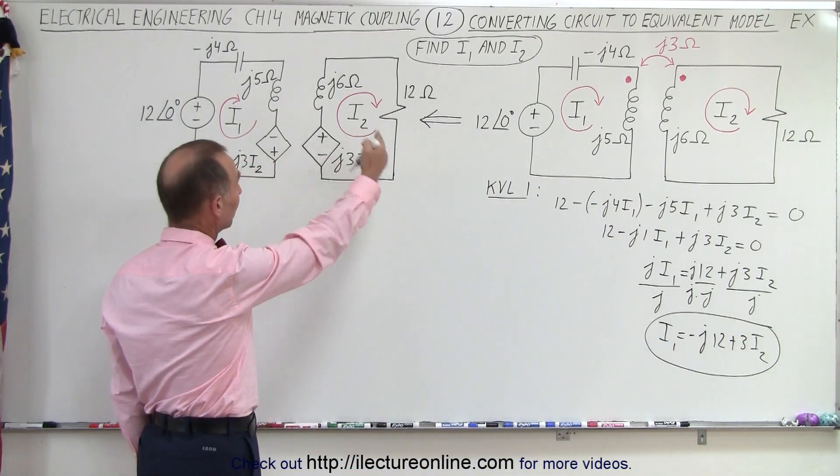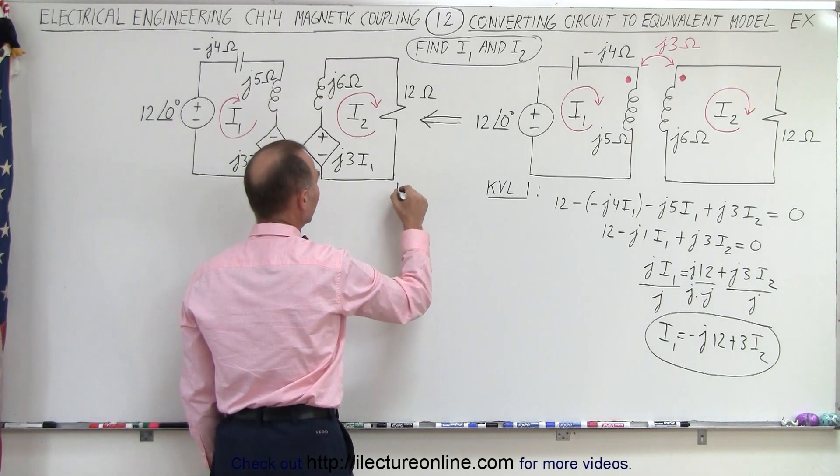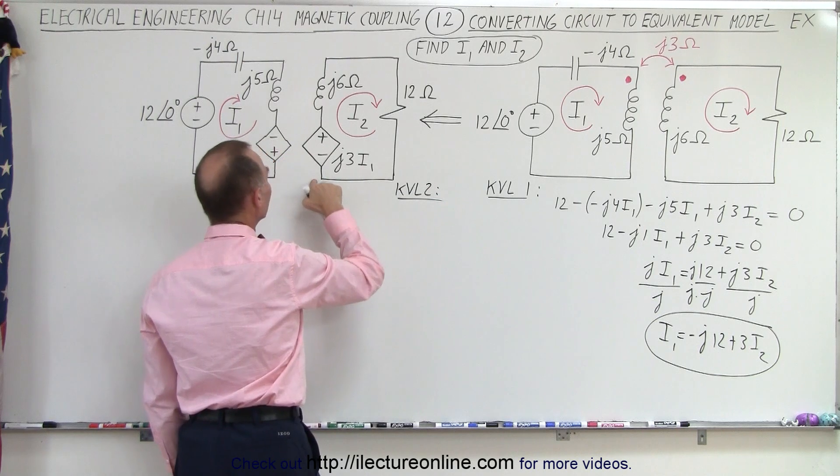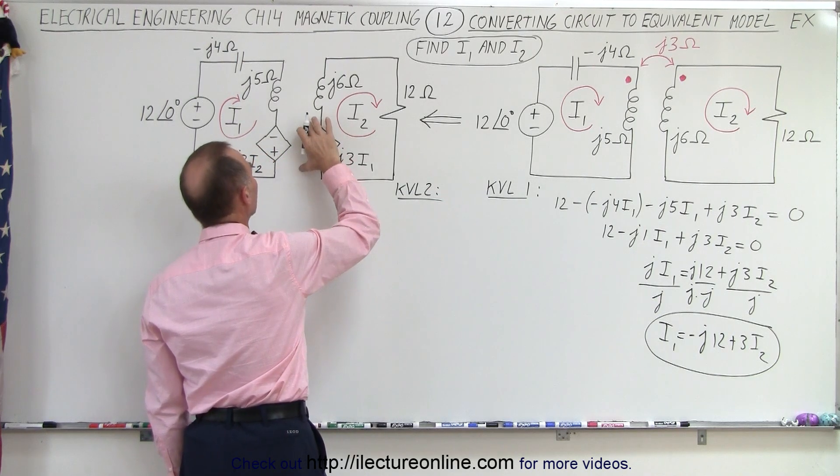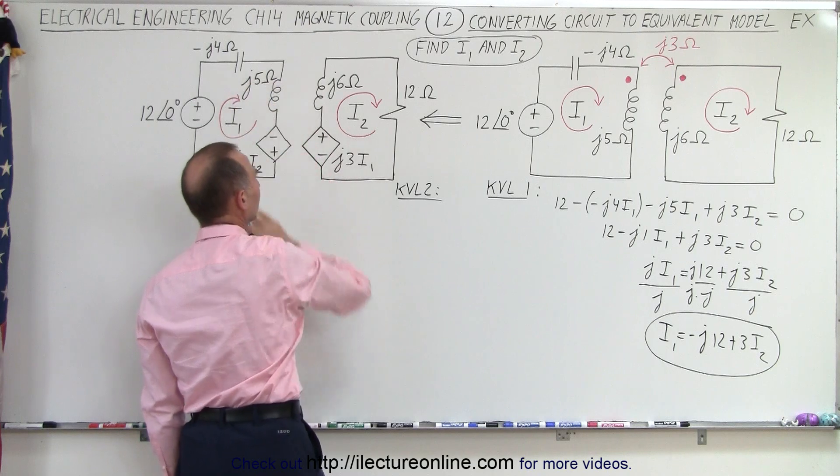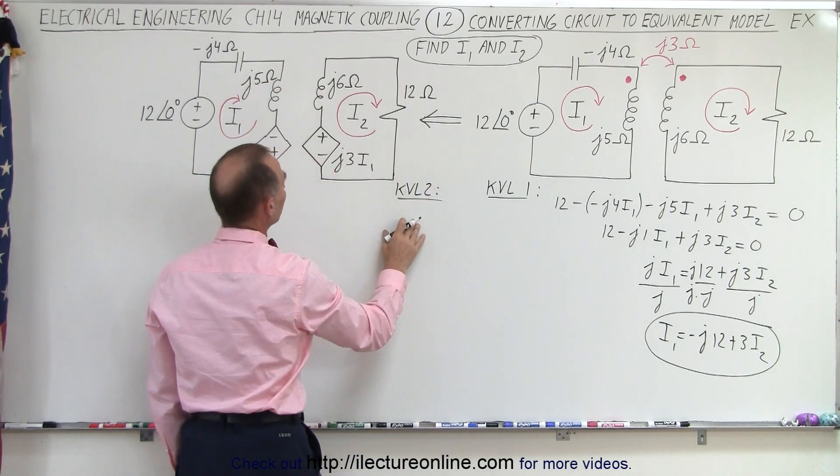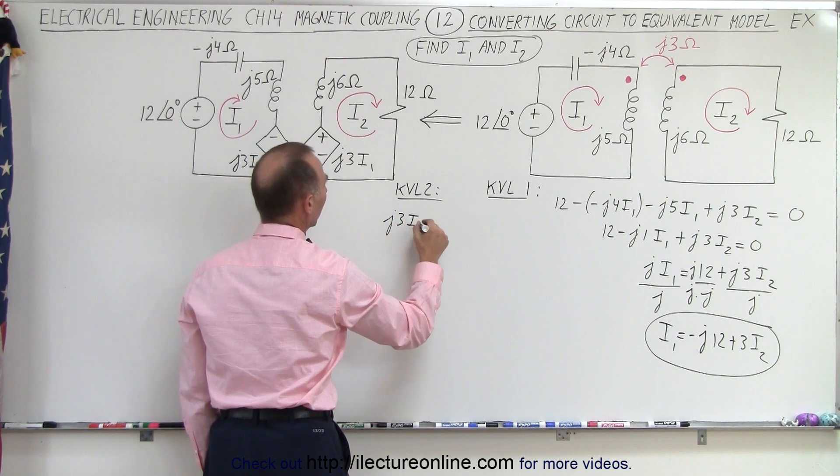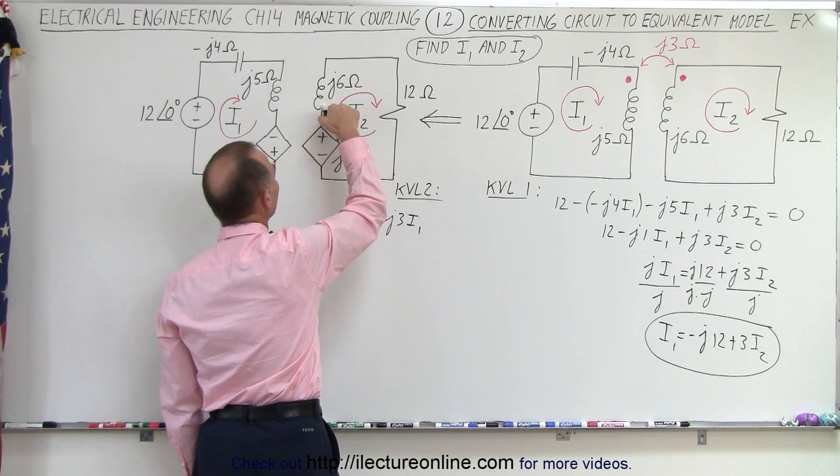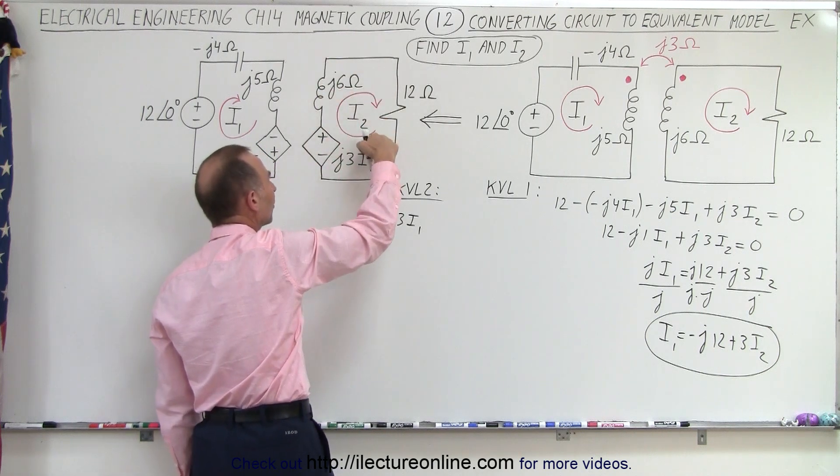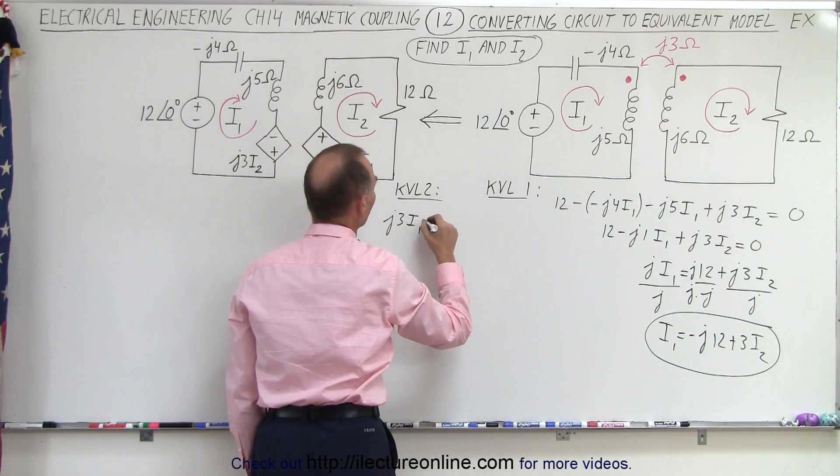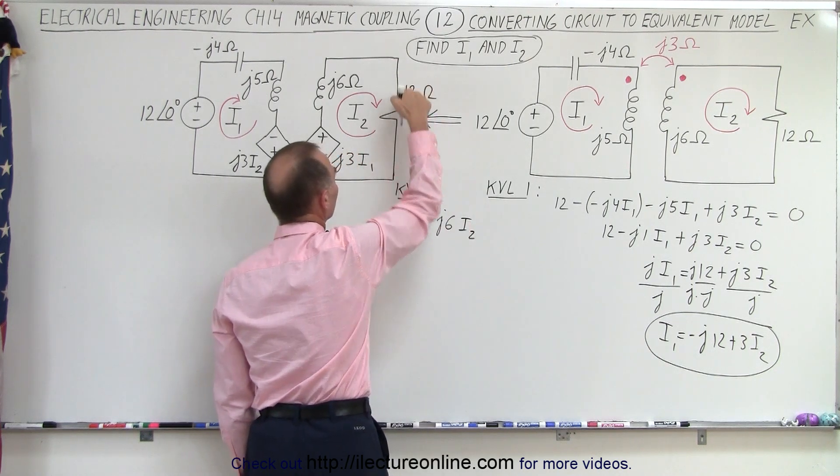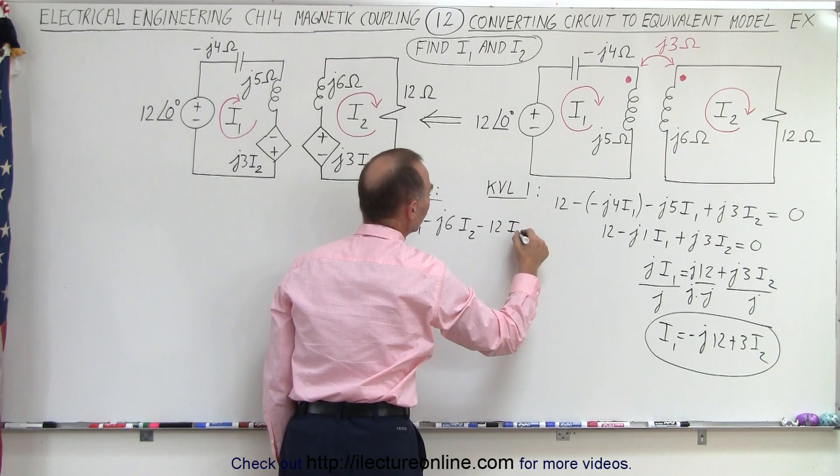So now we're going to do the same with the second loop. We're going to add up all the voltages. So we have KVL2. Start over here. Here's the voltage gain because of the voltage induced by the other circuit and the mutual coupling. So we have J3I1. That's a voltage rise from here to here. Then we have a voltage drop because we move in the same direction as the current. So it's minus J6 times I2. And again a voltage drop, minus 12I2.